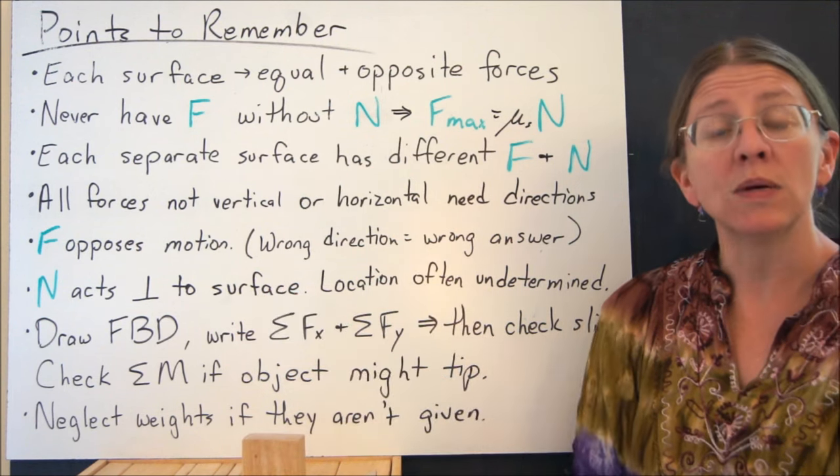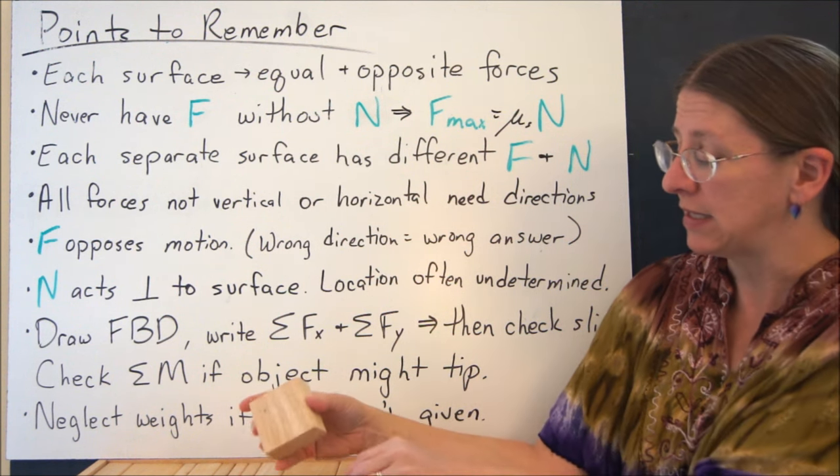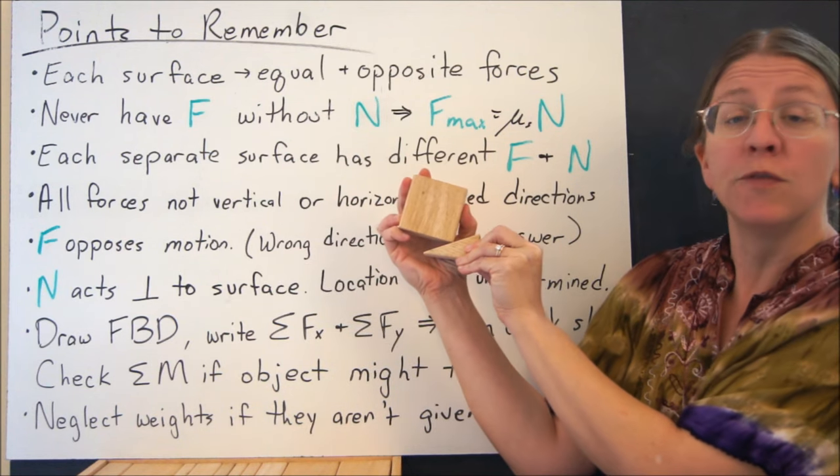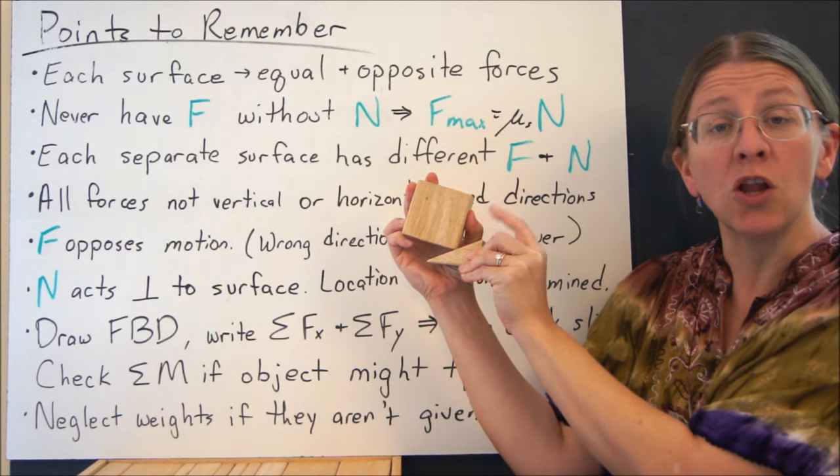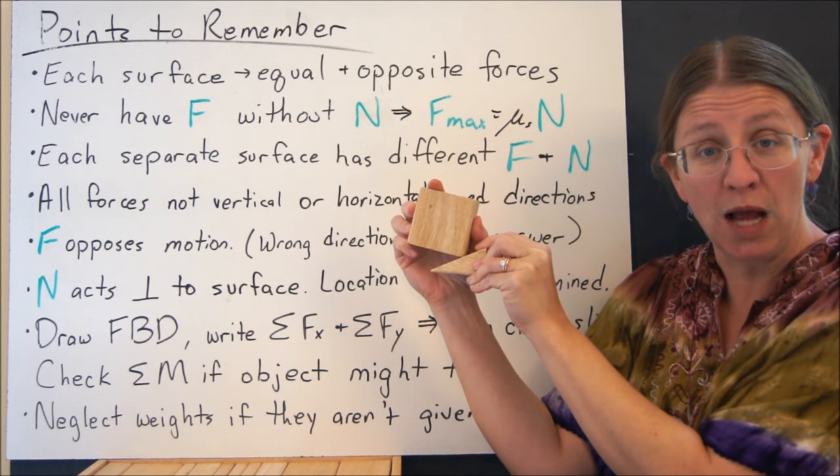N is always going to act perpendicular to the surface of the wedge. So if you have a wedge that's sitting in a block like this, the friction force has to act along the surface of the wedge, not along whatever angle your block is sitting at.